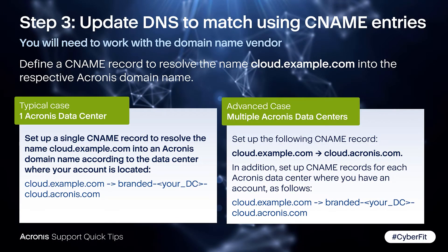Next, update the DNS records to add a CNAME. This requires working with the domain name provider for that account. You'll need a CNAME record for each data center you have — in a typical case, there's only one. Create a CNAME record that resolves to the appropriate domain name you're choosing. All data centers are listed in the KB article so you can identify which ones apply to you. If a partner has multiple data centers, you'll need to set up an additional CNAME record for each one.